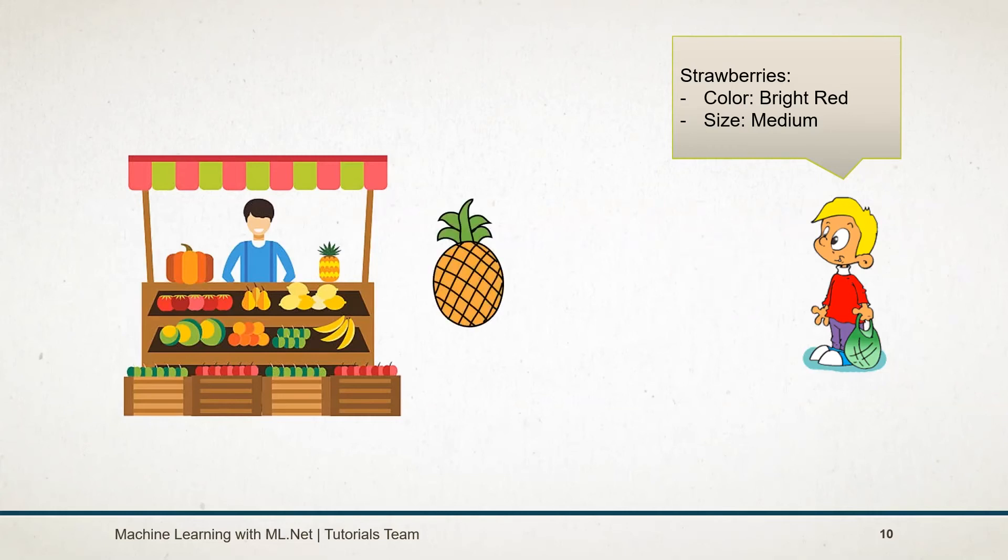And now on the next day, instead of strawberries, you want to buy a pineapple. But here you cannot apply the things that you learned for strawberries. Even bright red pineapple sounds funny. You will learn something from each experience and it will help you in future decisions. This is how we as humans learn from experience.